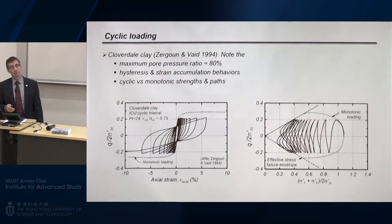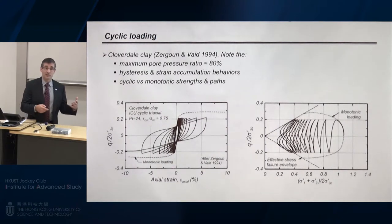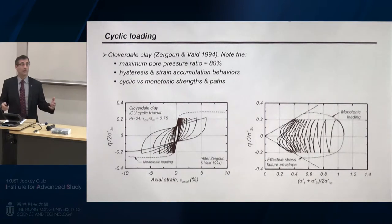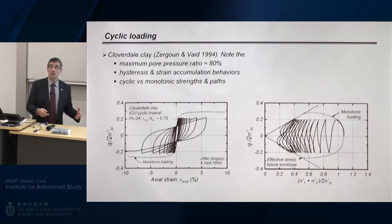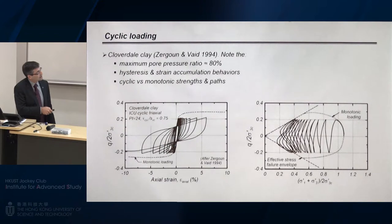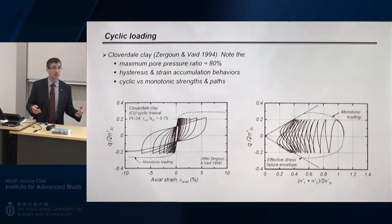To illustrate this, here is test data for natural Cloverdale clay near Vancouver from Zergoun and Vaid. Looking at the stress-strain response and stress path response: as the clay generates excess pore pressures, the effective stress drops to maybe about 20% of the initial value — an excess pore pressure ratio of about 80%. It doesn't get to 100% like we associate with liquefaction in sands, but pore pressures are fairly high. Once those high pore pressures are generated, the clay starts to accumulate strain fairly rapidly. The hysteresis loops are a little thicker than you'd associate with liquefying sands, but show many of the same characteristics.